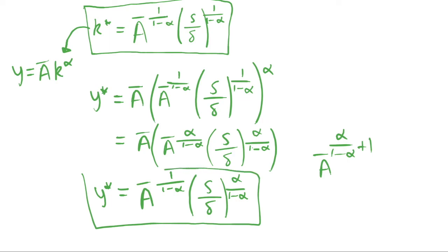It looks pretty much the same as our capital per capita, but we just have this term with depreciation savings raised to the power alpha over one minus alpha, instead of one over one minus alpha. And that pretty much characterizes our steady state: finding our steady state capital and our steady state output per capita.